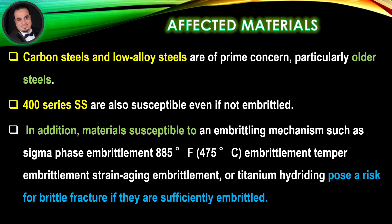Affected materials: carbon steels and low alloy steels are of prime concern, particularly older steels. 400 series stainless steels are also susceptible even if not embrittled. In addition, materials susceptible to an embrittling mechanism — such as sigma phase embrittlement, 885°F embrittlement, temper embrittlement, strain aging embrittlement, or titanium hydriding — pose a risk for brittle fracture if they are sufficiently embrittled.